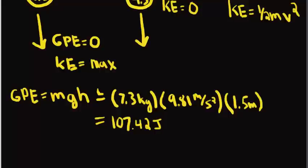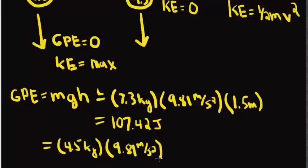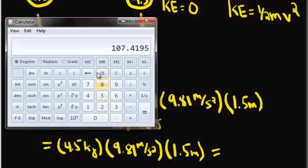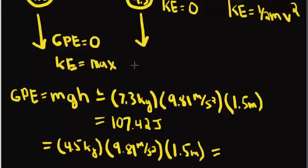Now, we can do the same thing for the lighter ball, which is going to equal 4.5 kilograms multiplied by the gravity, which is 9.81 meters per second squared, multiplied by the height, which is 1.5 meters. This answer we can calculate to be 66.22 joules.